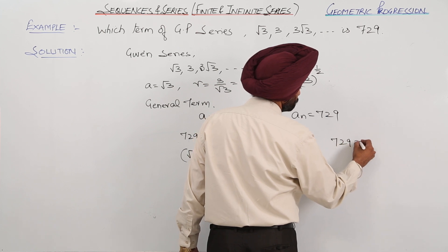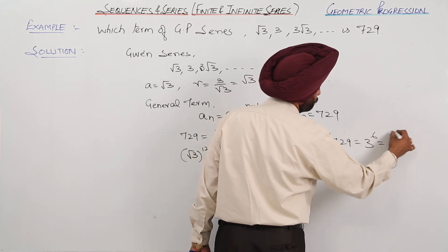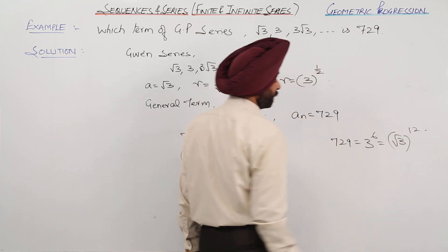729 is 3^6, or we can write it as √3^12.